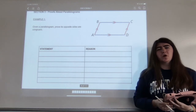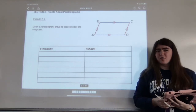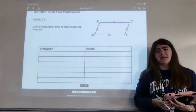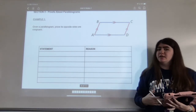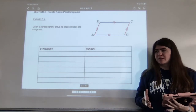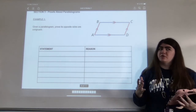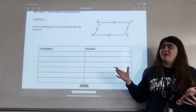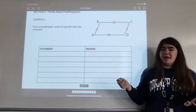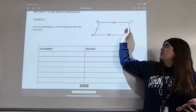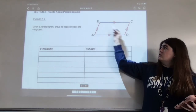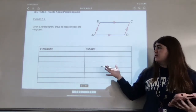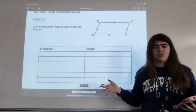Hello everyone. Today's video will cover unit 4 section 3 and we're going to be looking at some proofs about parallelograms. We're in a unit called triangle congruence, so you might be thinking why are we looking at parallelograms? Well the reality is parallelograms are made of triangles — if you were to draw a line straight through, you'd have two triangles. So these proofs about parallelograms are really more proofs about triangles.